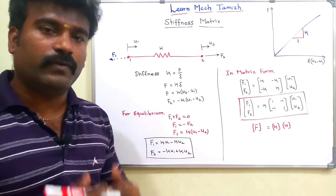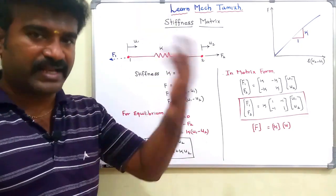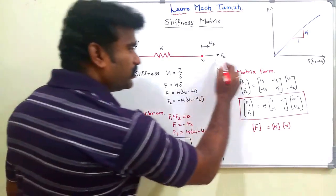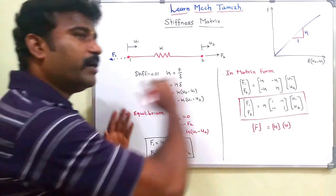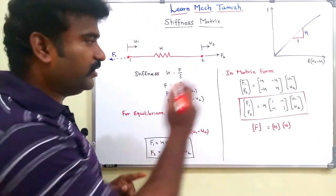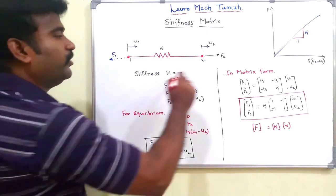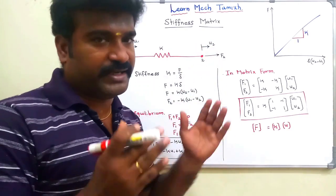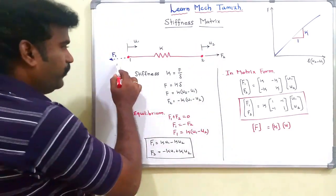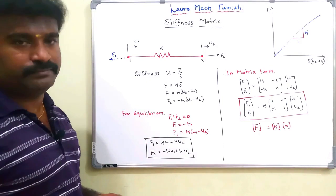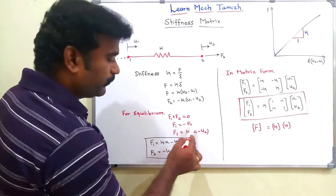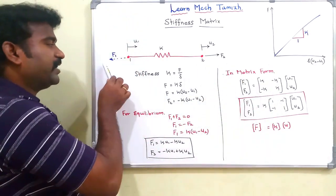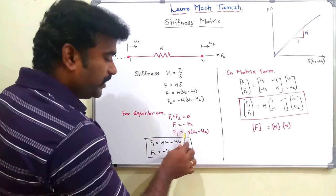You can create an external force, and against that there is a reaction force. So you can create a force F1, and this is the opposite reaction. Now, the equilibrium condition: F1 plus F2 equals 0, which means F1 equals minus F2. We can create a force against F1, so F1 equals minus F2.